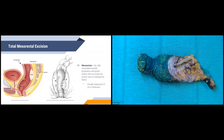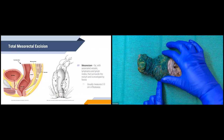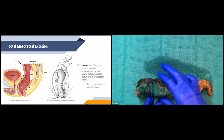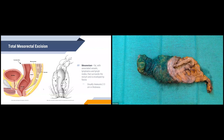A total mesorectal excision (TME) is completed with lower anterior or abdominal perineal resections for cancer. The mesorectum is the fat and associated vessels and lymphatics that surround the rectum, enveloped by a fascial layer. It's usually about two to three centimeters in thickness — you can see our mesorectum here on the specimen; all of this inked area is fat. The surgeon removes the entire mesorectum with a TME, which has been shown to reduce recurrence rates and increase survival rates, primarily by lowering radial margin positivity.